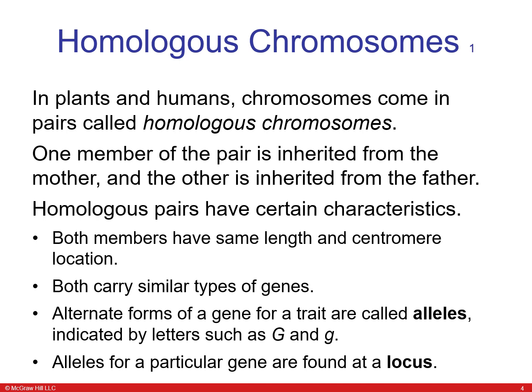In plants and humans, chromosomes come in pairs called homologous chromosomes. One member of the pair is inherited from the mother and the other from the father. They have the same length and centromere location, both carry similar types of genes, and they have alternate forms of a gene called alleles. Alleles for a particular gene are found at a locus on the chromosome.